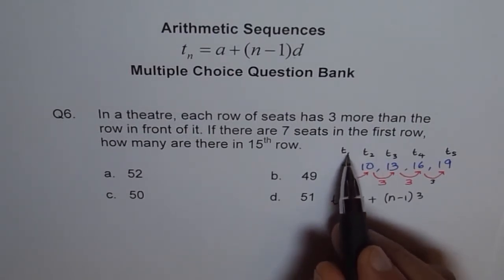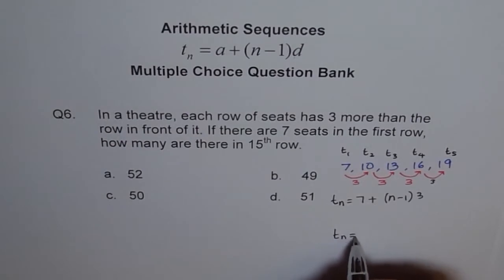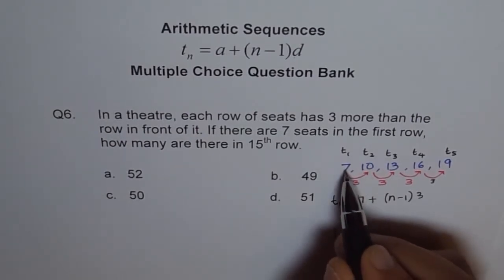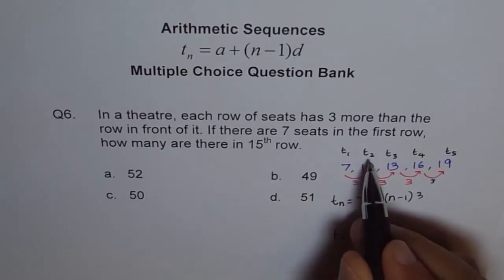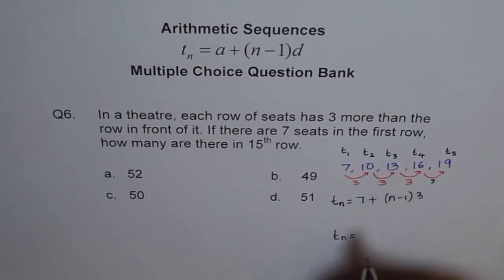So, 3 times some number plus some number will give you this number. Now, 3 times 1 is how much? 3 times 1 is 3. How do you get 7 plus 4? So I will give you this formula here. TN equals to 3 times 1 is 3, and how do you get 7 plus 4? 3 times 2 is 6 plus 4 is 10. 3 times 3 is 9 plus 4 is 13.